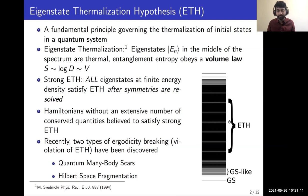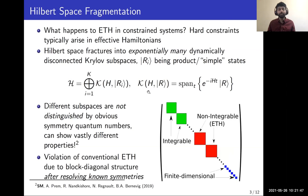The highly excited states in the middle of the spectrum are supposed to obey ETH. The strong form of ETH says that all eigenstates in the middle of the spectrum, after resolving the symmetries of the Hamiltonian, should satisfy ETH. It's believed that Hamiltonians without any extensive number of conserved quantities should satisfy this strong version. Recently, two types of ergodicity breaking — violations of ETH — have been discovered: quantum many-body scars and Hilbert space fragmentation.